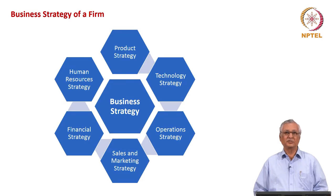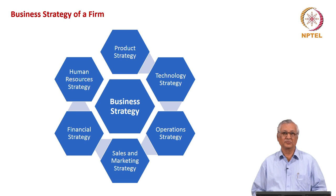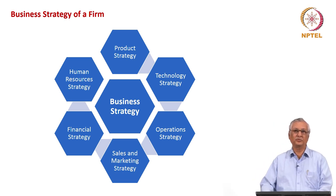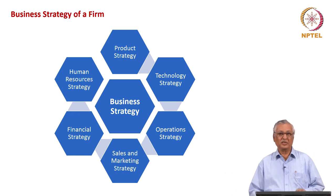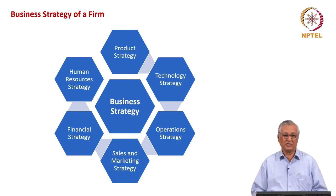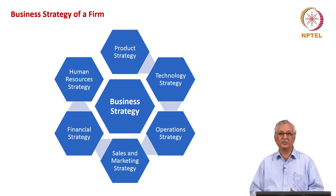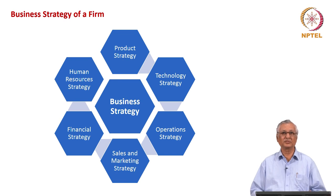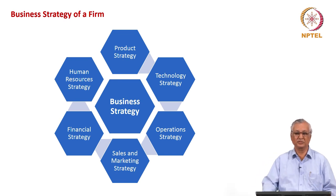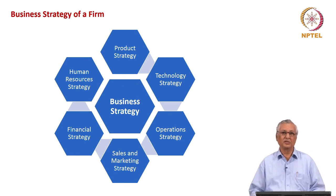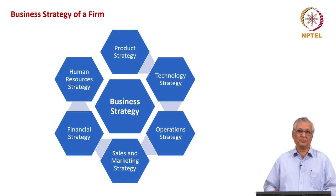This in a nutshell gives the components of a business strategy. Business strategy requires a number of functional strategies to support it — primarily the product strategy, the technology strategy, the operation strategy, sales and marketing strategy, financial strategy and human resources strategy. As this course progresses, we will be able to cover each of these strategies in some significant detail separately, but this session is about business strategy.